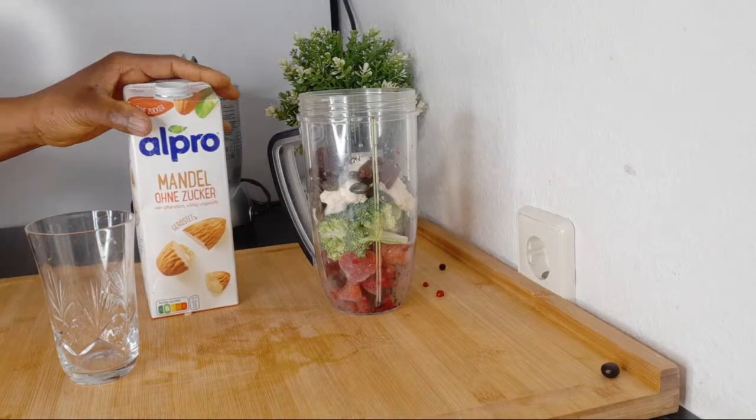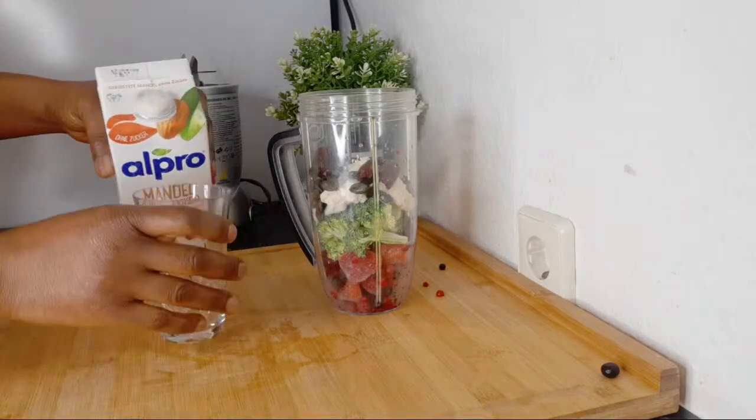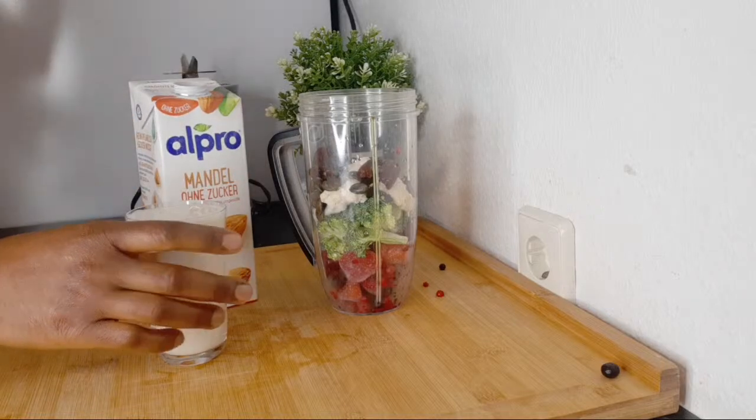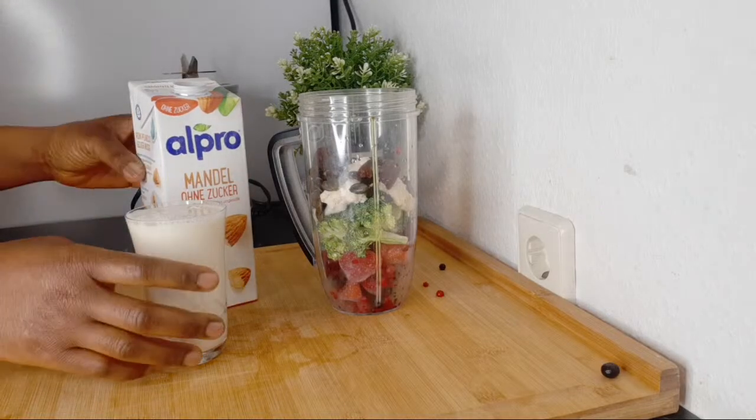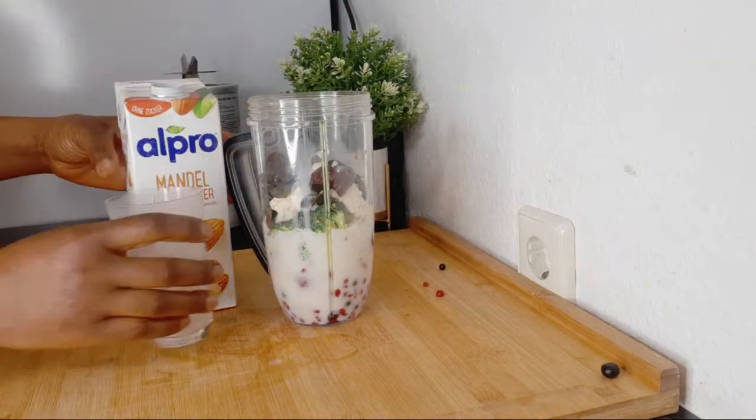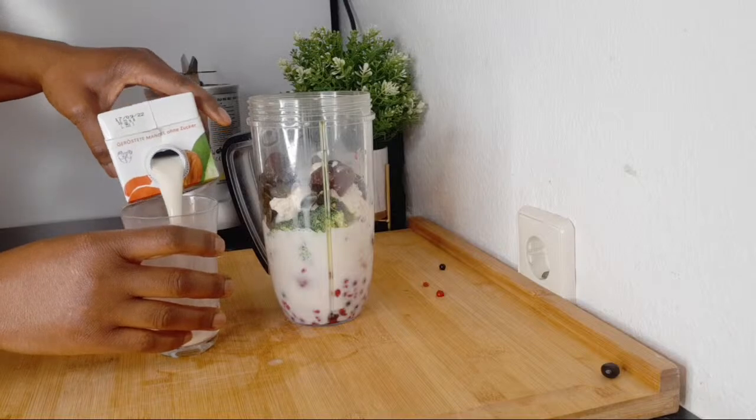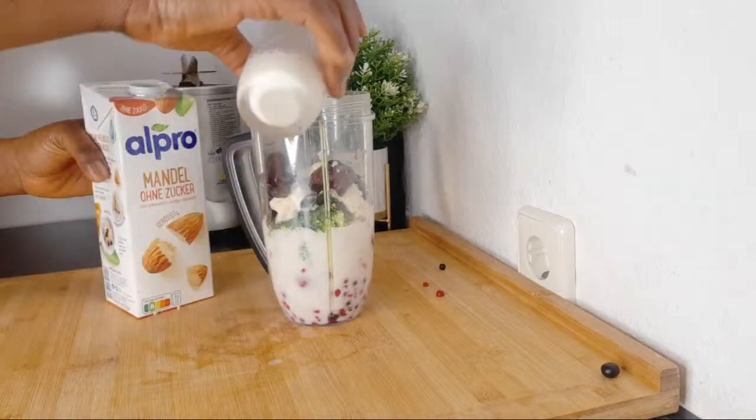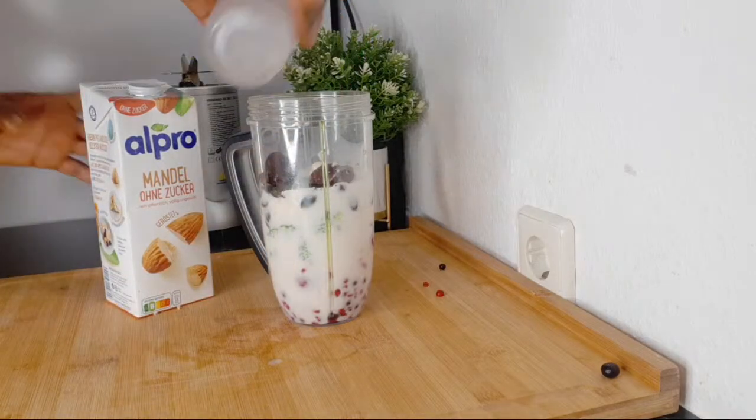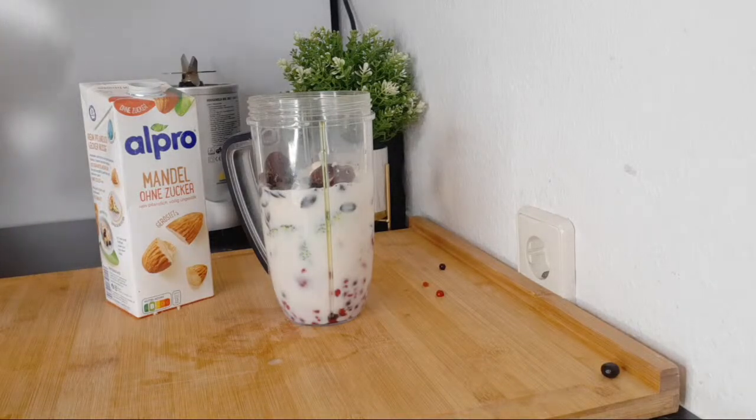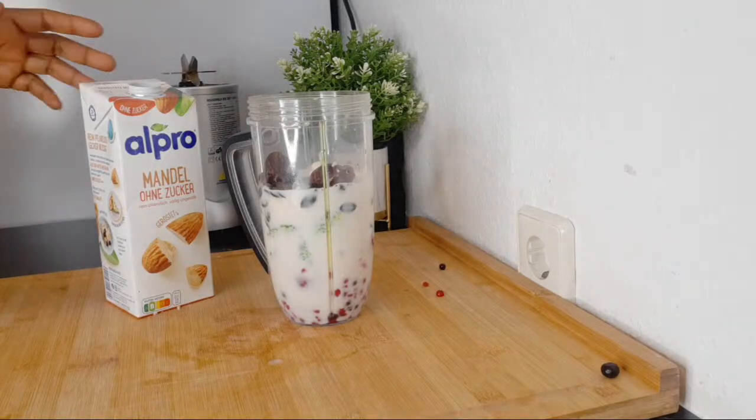Go for nut milk; it's better for your body to digest than cow milk. For the milk, I'm using one cup - adjust based on the consistency you want. Because I have frozen food here, I'd like to add about one and a half cups of milk. The cruciferous vegetables are high in fiber, so you might like to add more liquid because it will make the drink very thick.